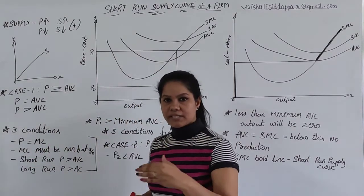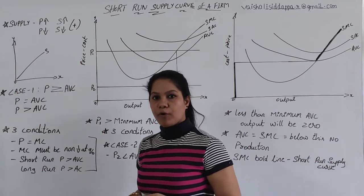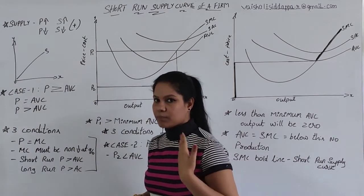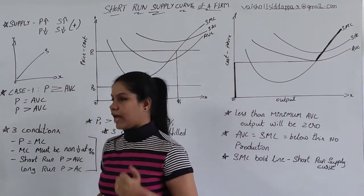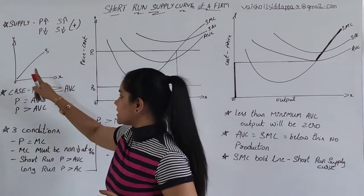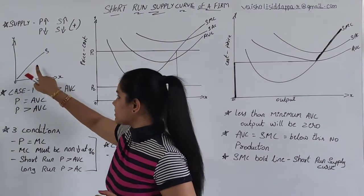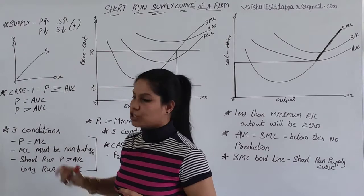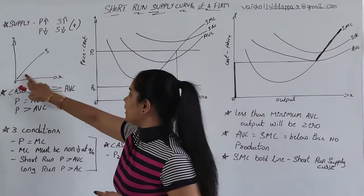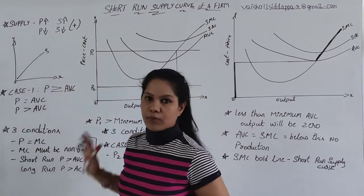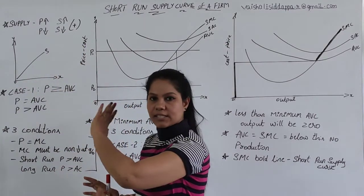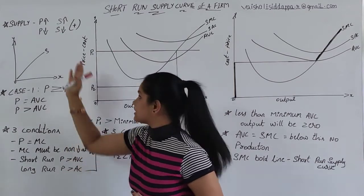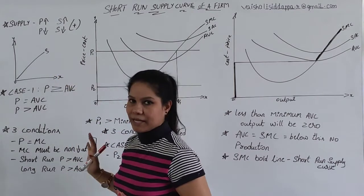When the two variables have a positive relationship, how does the diagrammatic presentation look? On the x-axis and y-axis, the supply curve will be positive in nature — it will be upward moving. This is how the supply curve looks, and this is the law of supply.